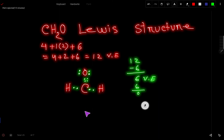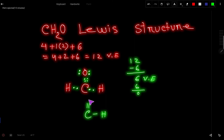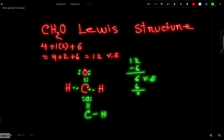We can also express this structure using dashes for bonding pairs. Here we put two dashes because there are two bonding pairs — a double bond between carbon and oxygen — and single bonds to the hydrogens. That is the Lewis dot structure for CH2O.